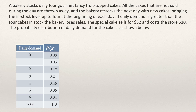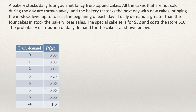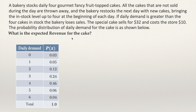This information was used in another video for solving a problem related to the expected value of some variables. This is a bakery that sells four special cakes, each priced at $32. They sell the cake for $32 and it costs the store $10. At the beginning of every day they have four cakes. I will be explaining how to compute the expected revenue for the cake — what will be the expected revenue?